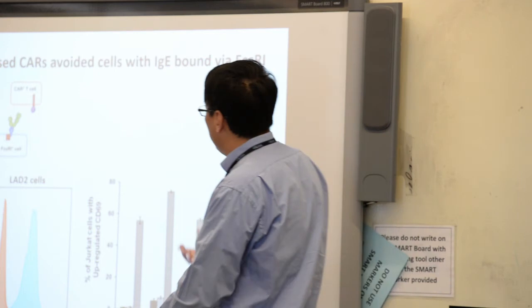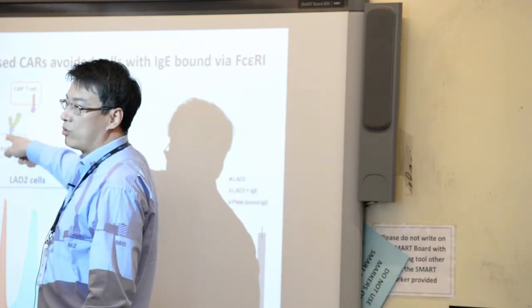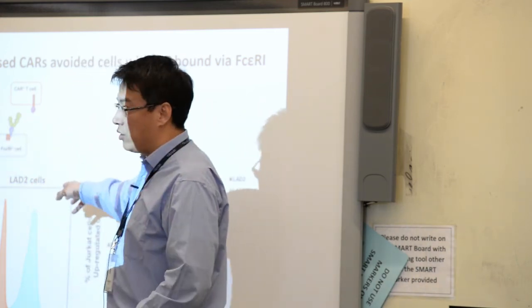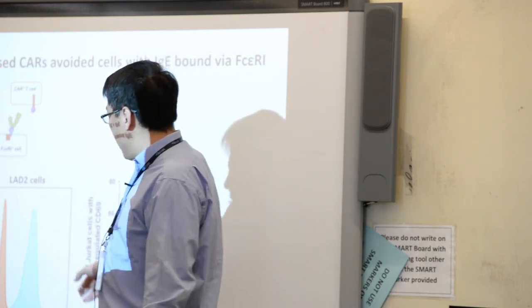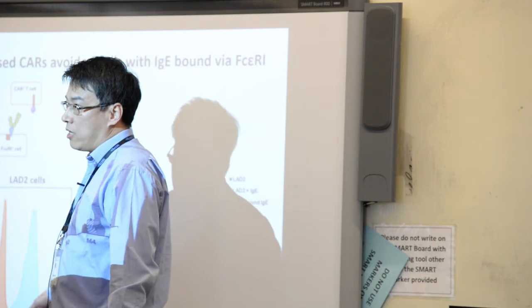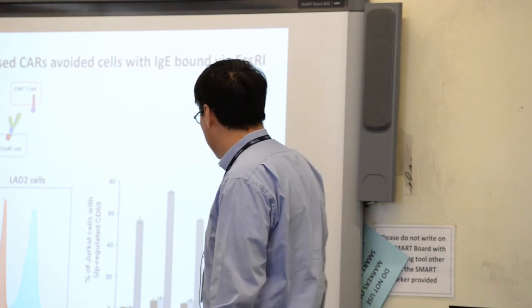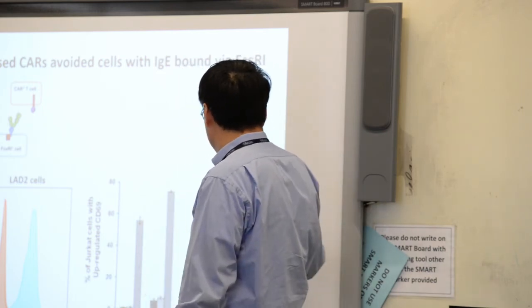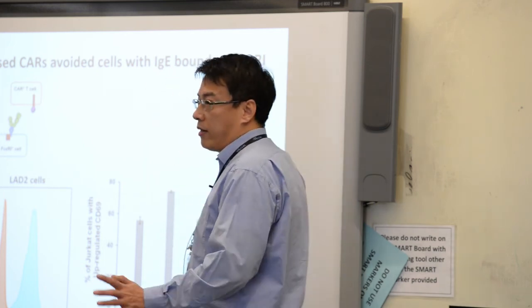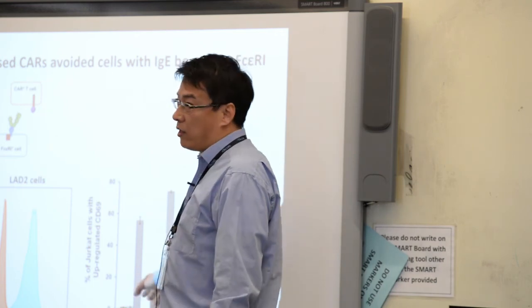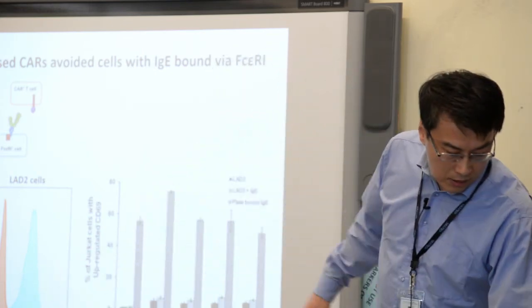In this assay we look at whether the CAR T cell will respond to a cell with secreted IgE captured through receptor 1. In this case we use LAD2 cell, which is a mast cell line expressing a lot of receptor 1, and we can load the cells with a lot of secreted IgE. As you can see here, we're still looking at CD8 response. This is a positive control using plate-bound IgE. But neither the wild type or any of the mutants showed any significant response to these cells, which means our CAR does not specifically target these cells.